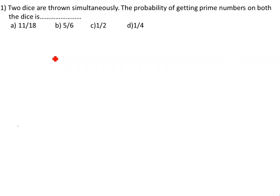Today we are going to learn probability. The first question is: two dice are thrown simultaneously. Find the probability of getting prime numbers on both the dice.